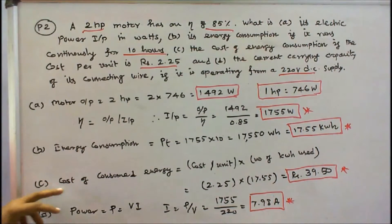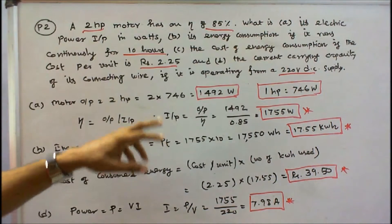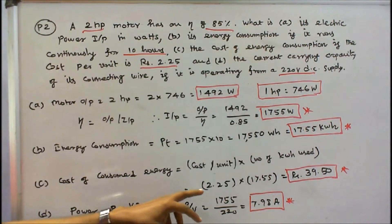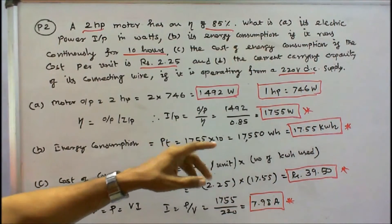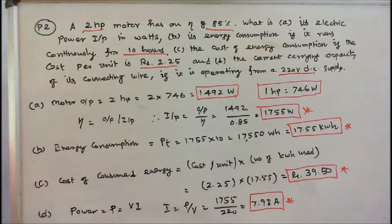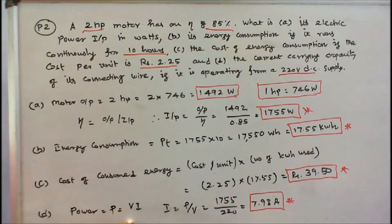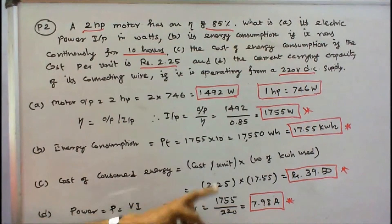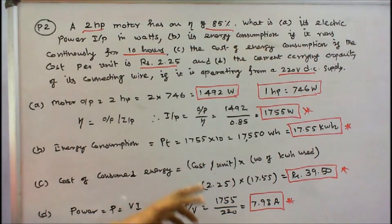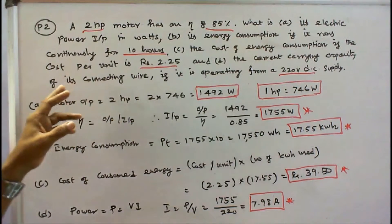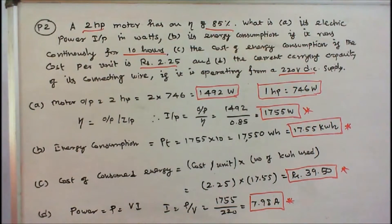Next is cost of consumed energy. Cost per unit is given as Rs. 2.25. So 2.25 into 17.55 is equal to Rs. 39.50. We also find the current carrying capacity of the connecting wire. I is equal to P by V: 1755 divided by 220 is equal to 7.98 Amps. So current carrying capacity is 7.98 Amps.